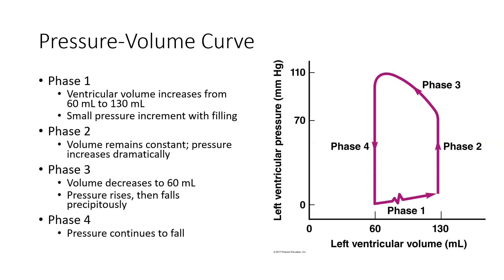Phase three is ventricular ejection. Looking at volume and pressure here, the pressure is going to slightly rise as the ventricle contracts, and the volume decreases as blood leaves the chamber. The curve takes a backwards turn, indicating that volume is dropping while pressure is slightly rising. Towards the end, pressure falls off as volume continues to drop, indicating blood is leaving the ventricle and moving out into the artery.